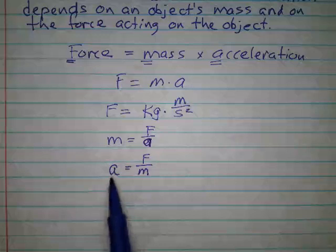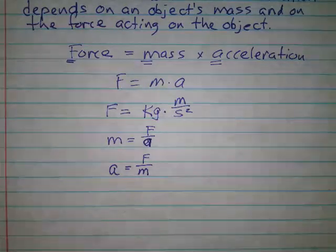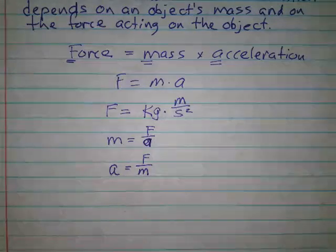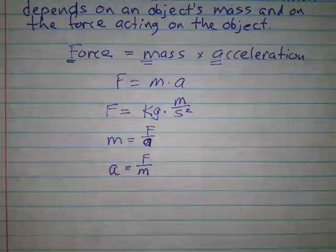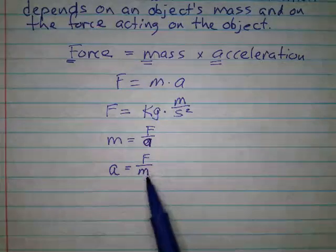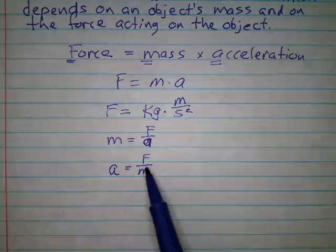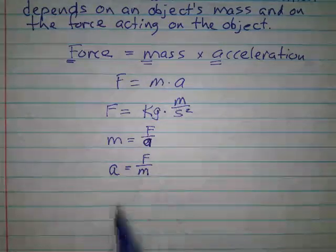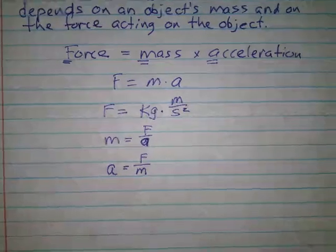Likewise, we can calculate acceleration if we know the force that was applied and the mass of the object. Now, you're saying, but Mr. Collier, we know how to calculate acceleration, and that is speed final minus speed initial divided by time. And it absolutely is. And I'll ask you to calculate that both ways. And you'll know which formula to use based on what information I give you. If I give you some speeds and some time, then you know to do it the original way. And if I give you force and mass, then you'll know to do it this way. And it's pretty simple.